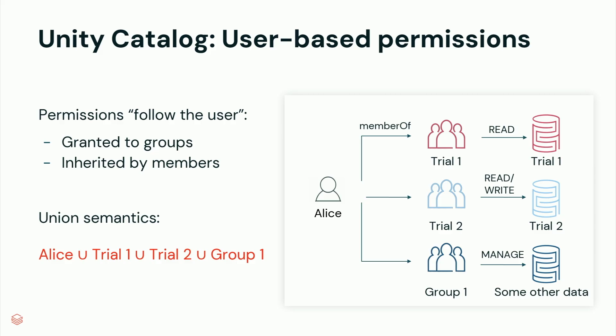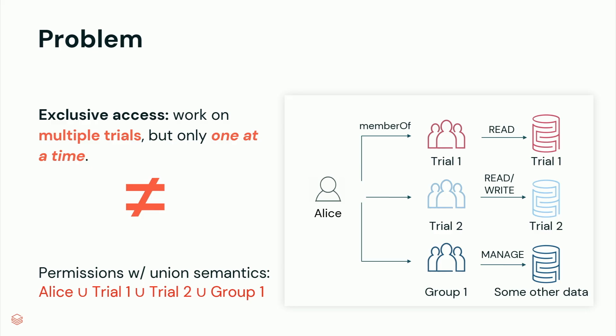When we introduced Unity Catalog, we changed that permission model to a user-based permission model where permissions follow the user. So if I've been granted access to something, I can access the data independently of the compute I'm running on. If we modeled the previous example, Alice would be a member of groups for trial one, trial two, and group one, and via membership she would actually get access to all the data those groups have been granted access to. So with Unity Catalog, Alice would have the union of all permissions granted to her personally or through trial one, trial two, or group one. This doesn't go well with the exclusive access use case, where we don't want Alice to have the union of permissions across all trials — we only want her to have access to one at a time.